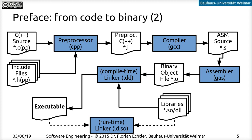We start with the C or C++ source, which is first run through the preprocessor. This translates macros and loads include files, producing as an intermediate step a preprocessed C file — still C code, but with modifications such as include files copied in. Then comes the actual compilation, which translates the C code into assembler. You can look at these intermediate files; they have the ending .s. This assembler source is then processed by the assembler tool, which produces the actual binary object file containing machine code.